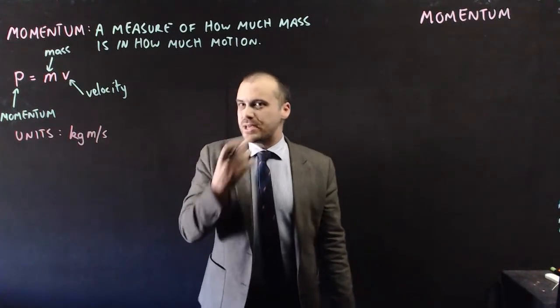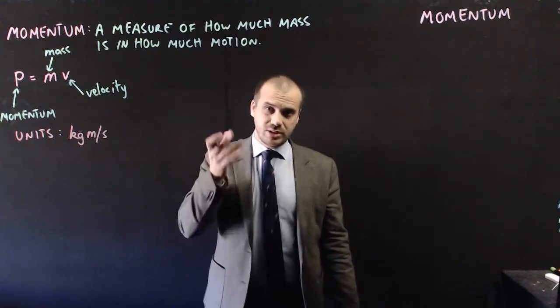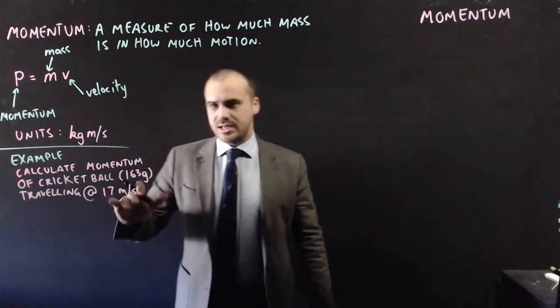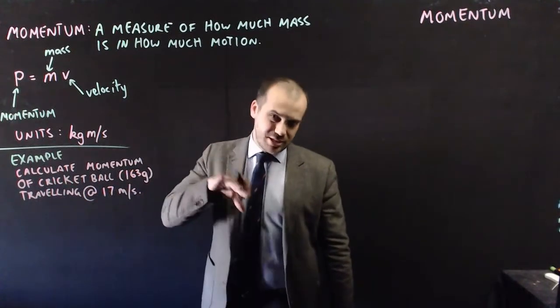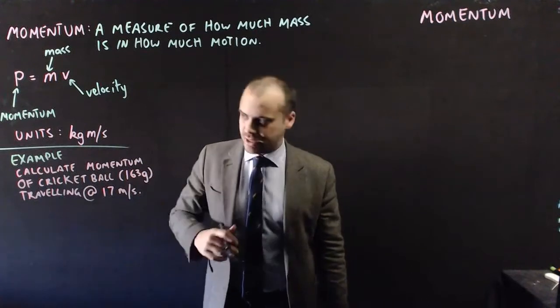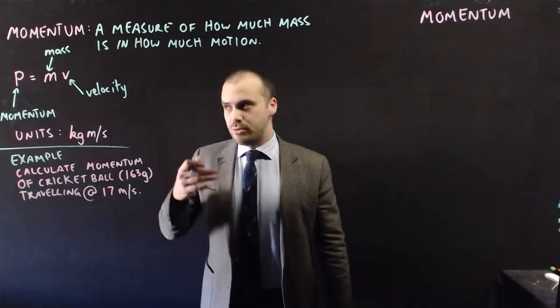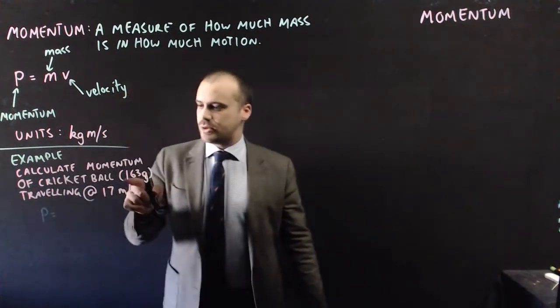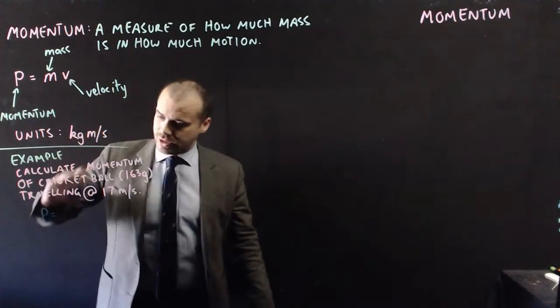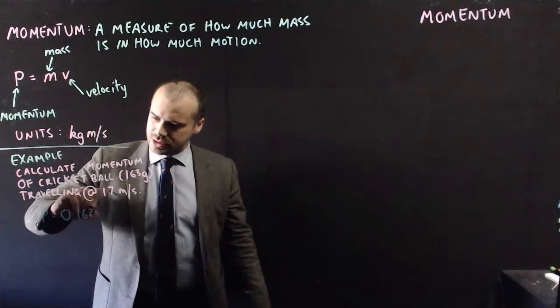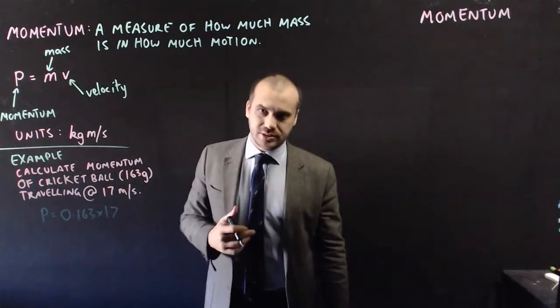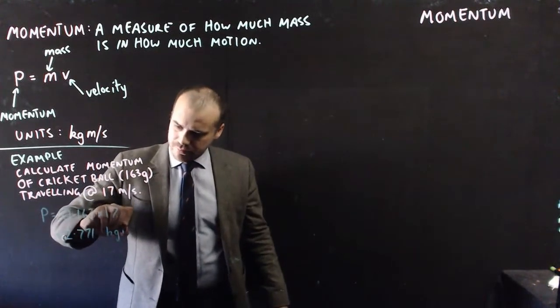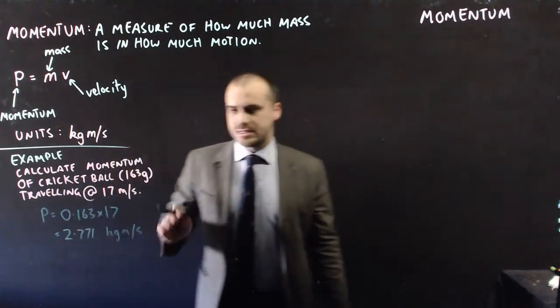The best way to show you this is with our example. Let's think cricket balls. A cricket ball weighs 163 grams and travels at 17 meters per second. That's 60 kilometers an hour converted to meters per second. We can calculate its momentum using this formula. The momentum equals the mass in kilograms, 0.163, times the speed in meters per second. That's 2.771 kilogram meters per second.